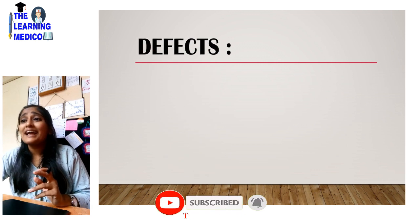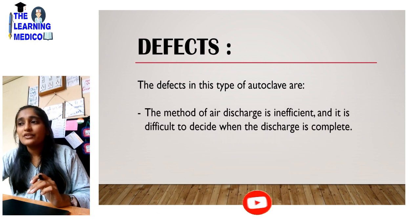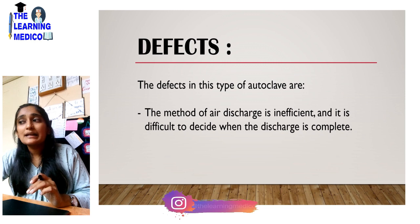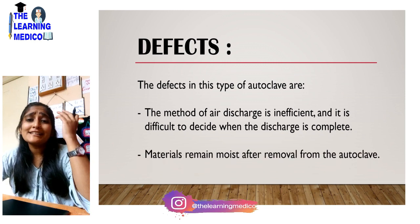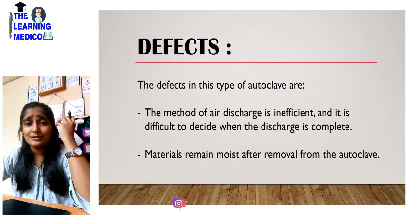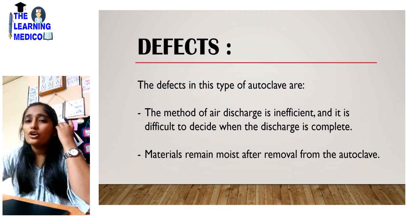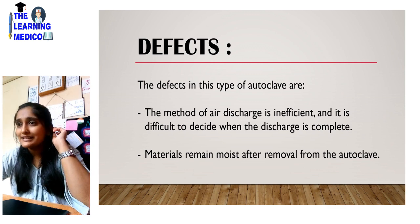The defects of this type of autoclave: the method of air discharge is insufficient and it is difficult to decide when discharge is complete. The material remains moist after removal from the autoclave, which means moist heat sterilization leaves the material more moist and the material may be damaged.